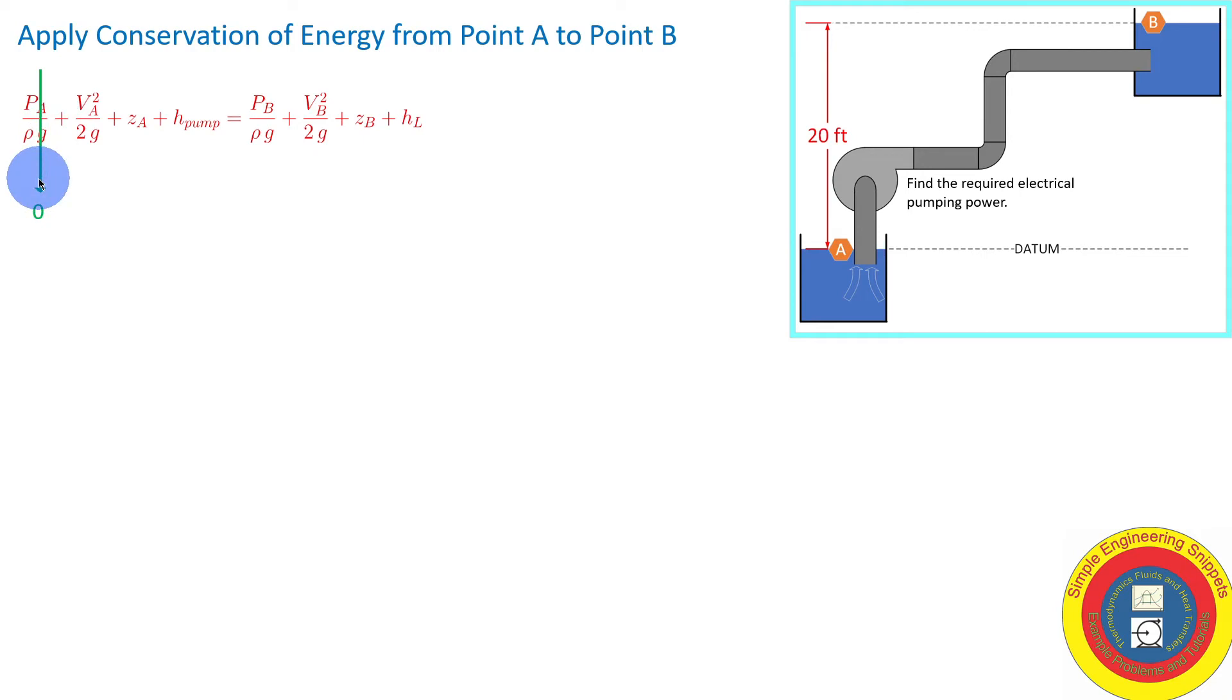We're at atmospheric pressure, so pressure at alpha is 0. It's a large tank, so velocity at alpha is 0. We defined our elevation to be 0. The pressure at bravo is also atmospheric or 0. It's a tank at bravo, so velocity is also 0. We can simplify and solve this equation for the head of the pump, which is equal to the difference in elevation plus the head loss. So we need to calculate the head loss.